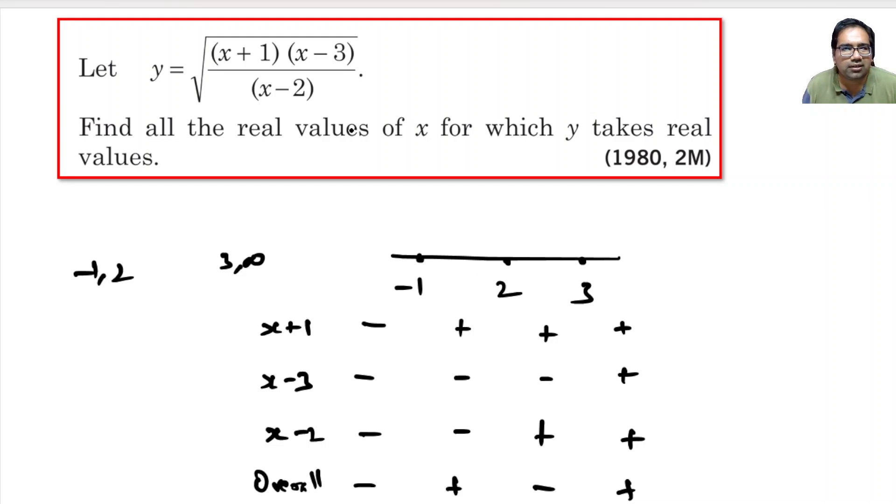Here we can include 3 because 3 is in the numerator. x equal to 3 is still fine. Then at max, this will become 0. So, that is still fine. So, close bracket 3 and open bracket infinity.